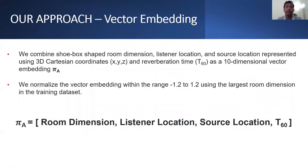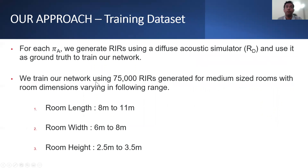We combine the shoebox-shaped room dimensions, listener location, and source location represented using 3D Cartesian coordinates and reverberation time as a 10-dimensional vector embedding piA. We normalize the vector embedding within the range of minus 1.2 to plus 1.2 using the largest room dimension in the training dataset. For each vector embedding piA, we generate room impulse responses using a diffuse acoustic simulator and use it as ground truth to train our network.